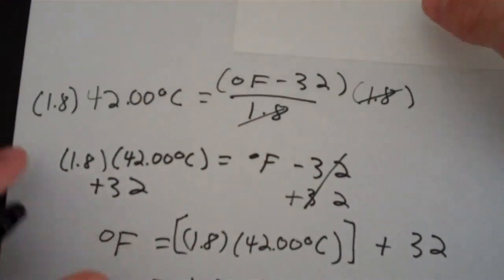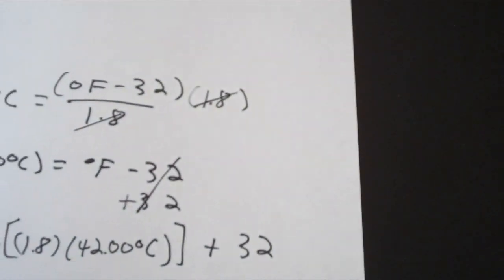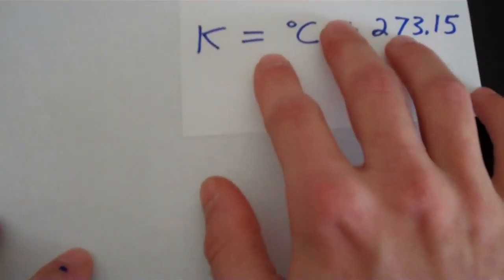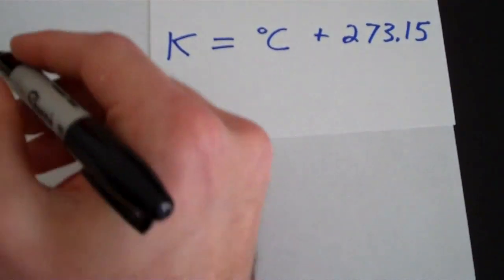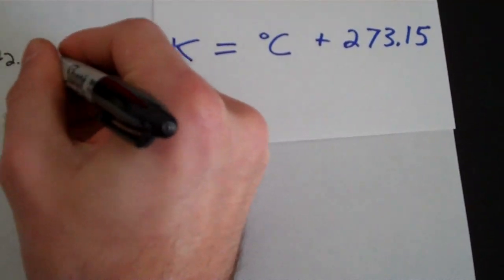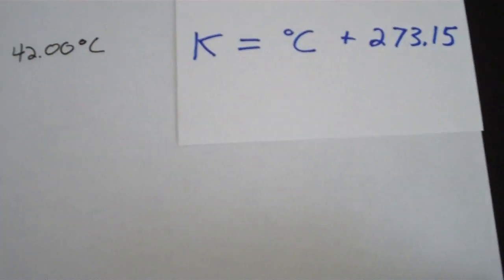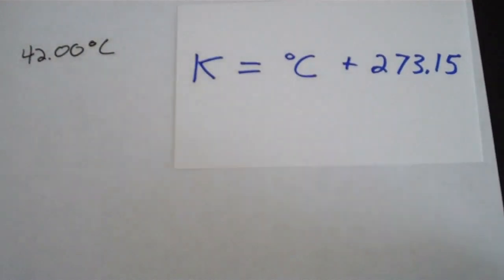Let's grab another sheet of paper here. So what is 42.00 degrees Celsius in Kelvin? This one's actually a lot easier than the previous one.